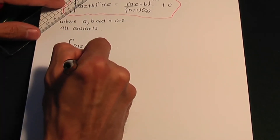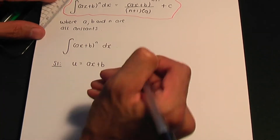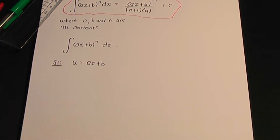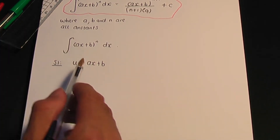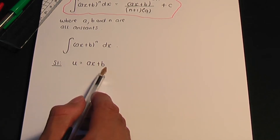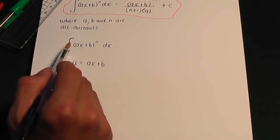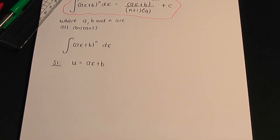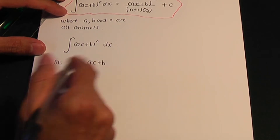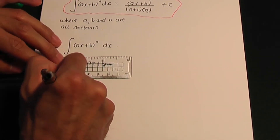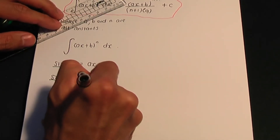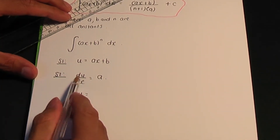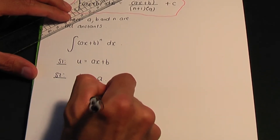If I take my substitution u to be ax plus b — when choosing your substitution, think about when you calculate du/dx, is it going to relate to the remaining terms? If I work out du/dx of ax plus b, I get a, which is a constant. And a is related to the constant in my integral. So substitution does work. I'm going to take u to be ax plus b. In step 2, du/dx — differentiating ax plus b — that is a. Thinking of du/dx as a fraction, du will be a dx.